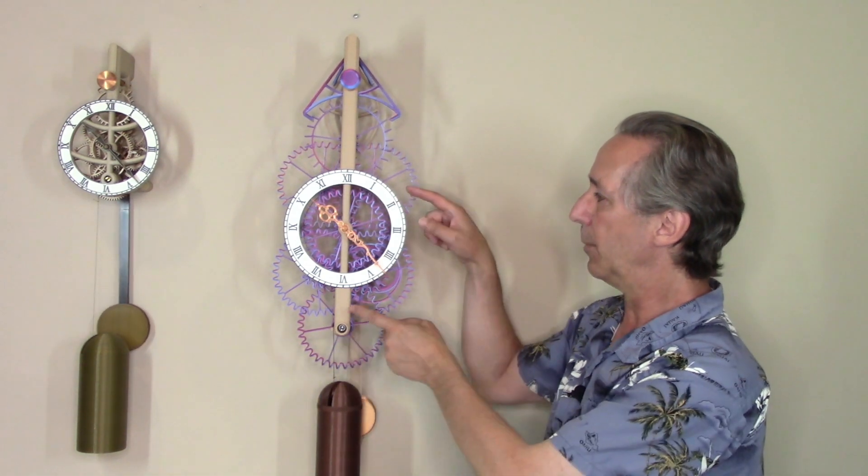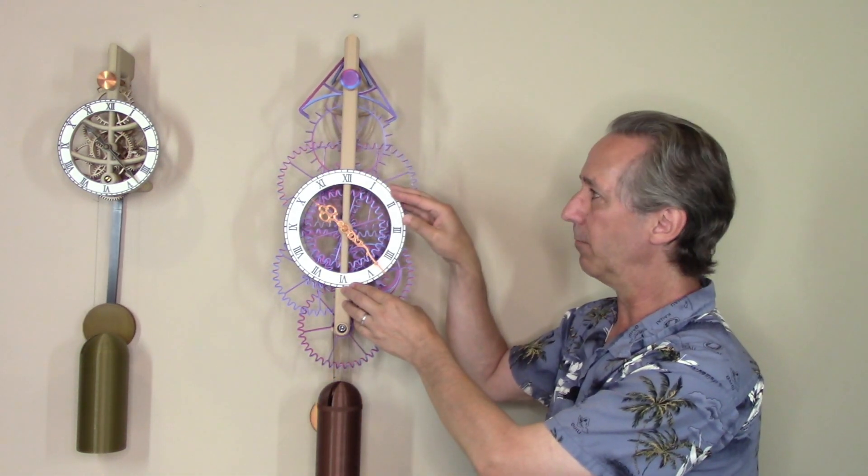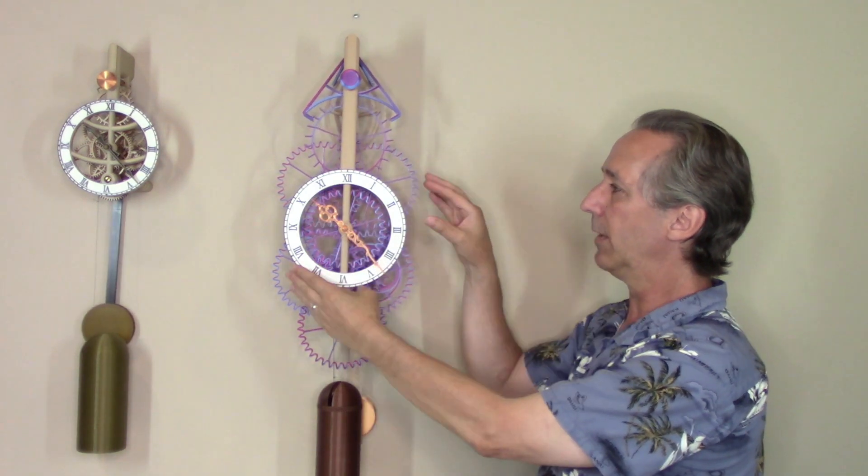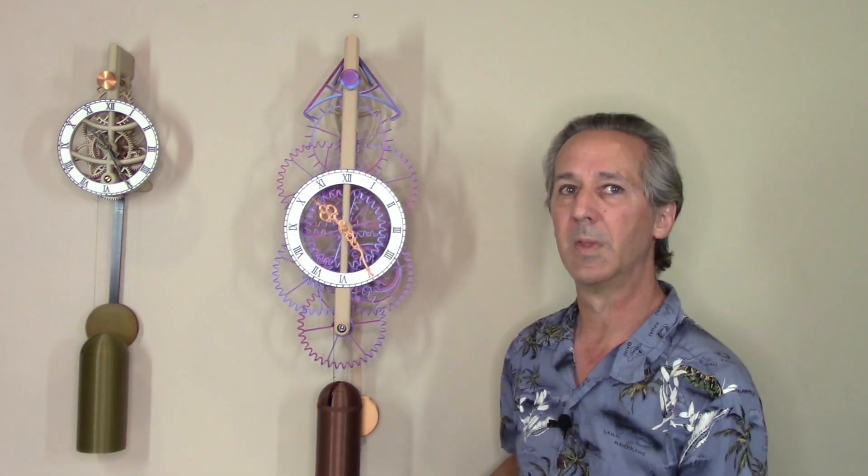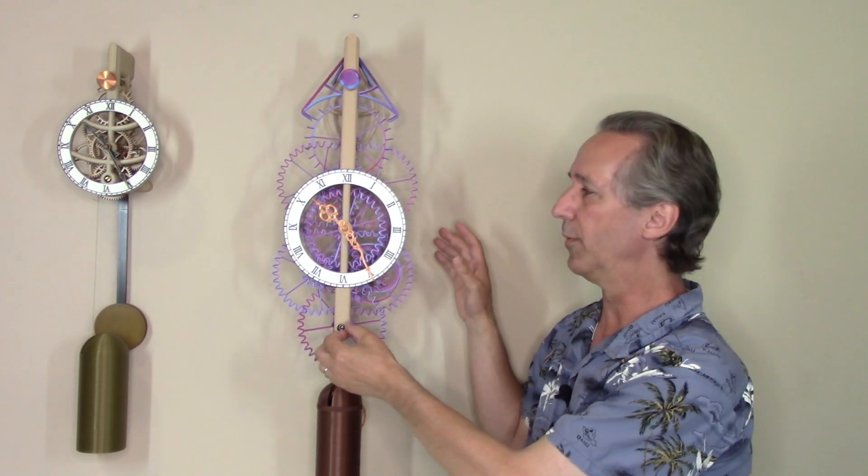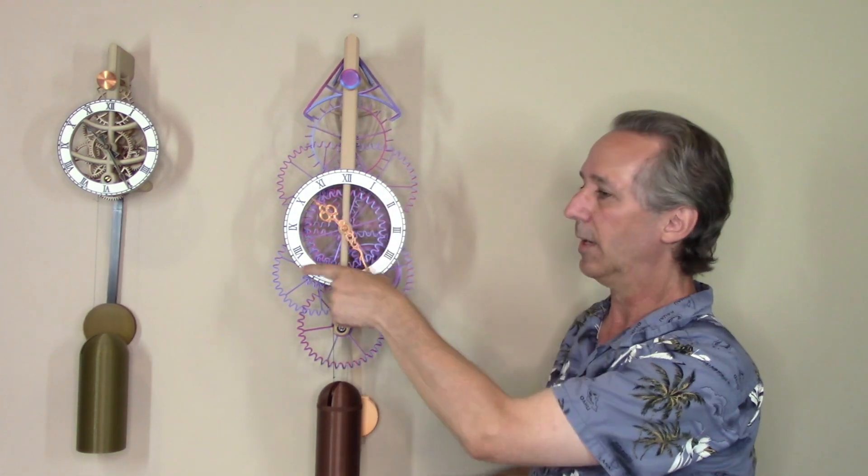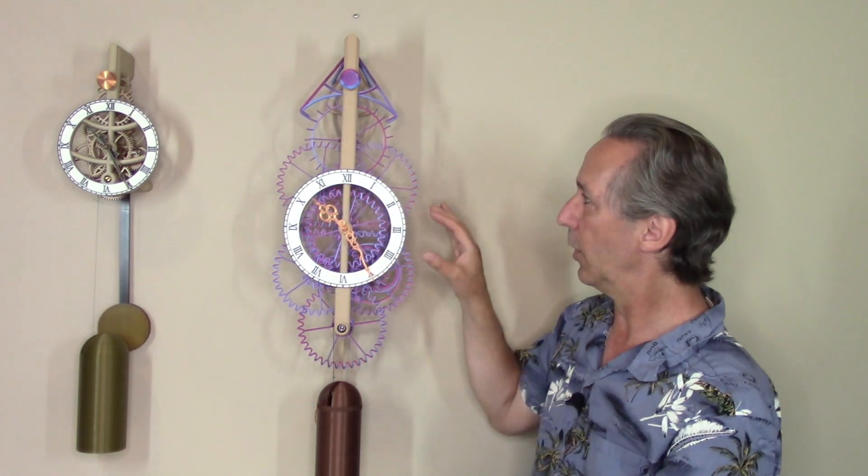So the basic structure of any of my clocks is everything is focused around the dial. So that's a quick overview of the gearing in the clock. Now I'll start talking about some of the details about each of those components.